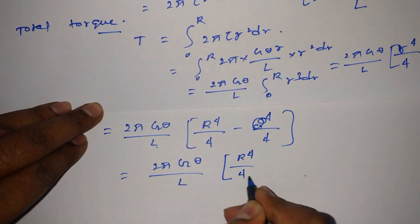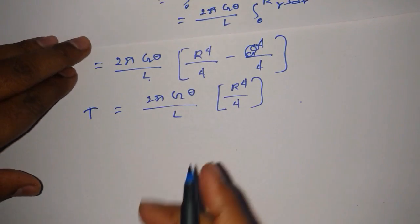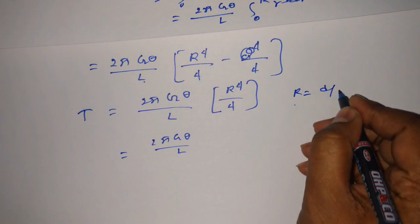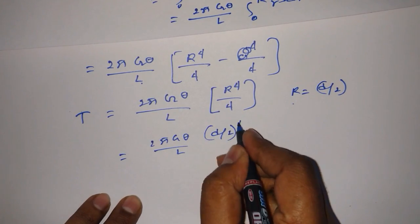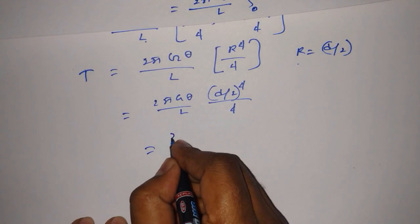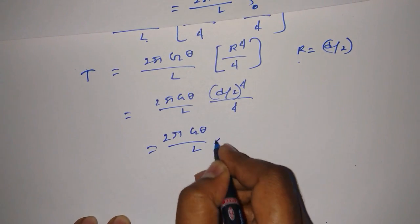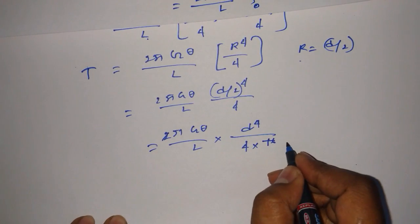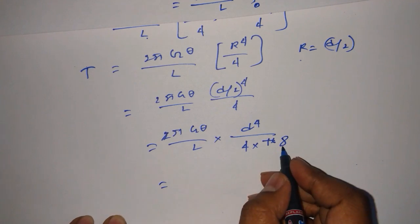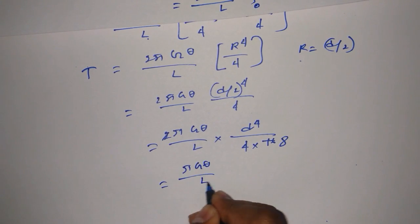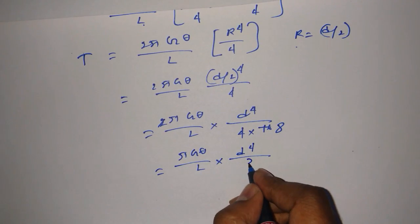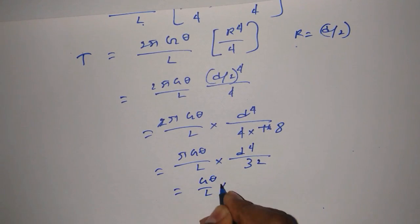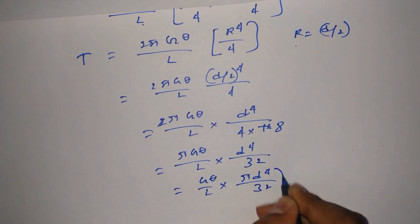Now substituting R equals d/2: T equals 2·pi·G·theta/L times (d/2)⁴/4, which simplifies to 2·pi·G·theta/L times d⁴/(4×16). Simplifying: 2 over 64 gives 1/32, so T equals pi·G·theta/L times d⁴/32. We can write this as T equals (G·theta/L) times (pi·d⁴/32).